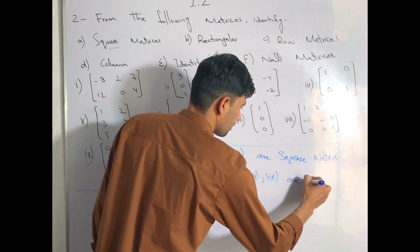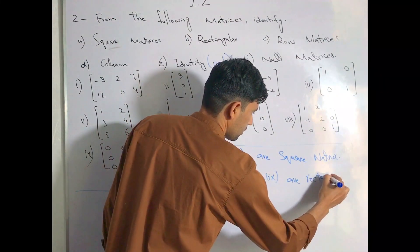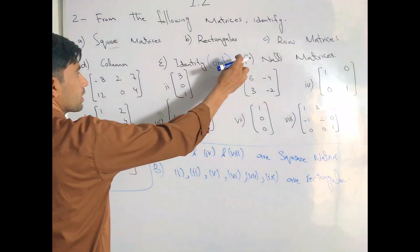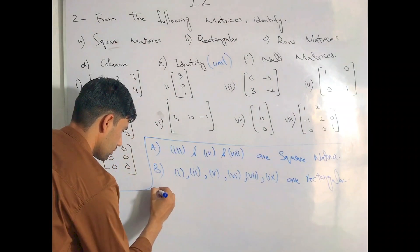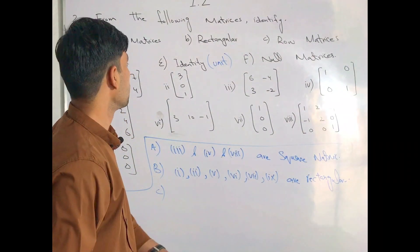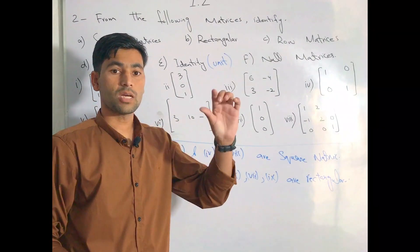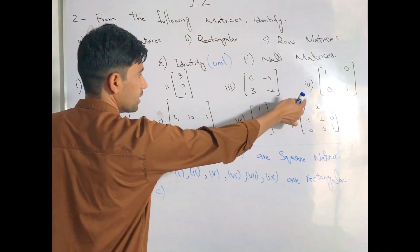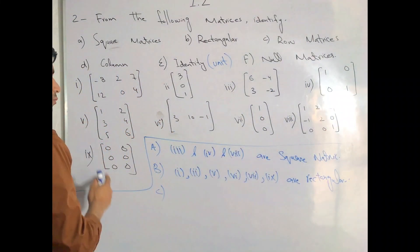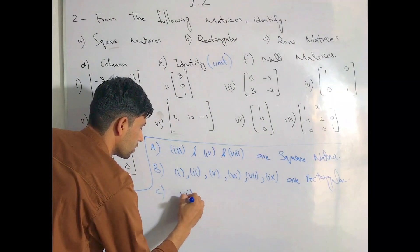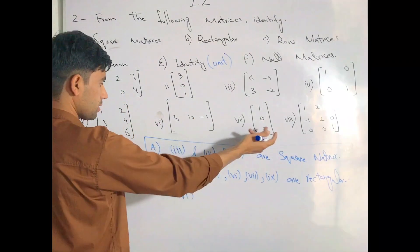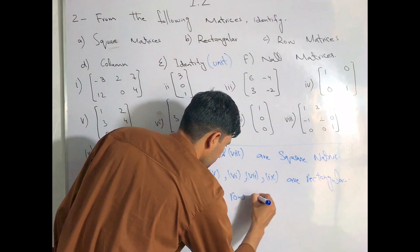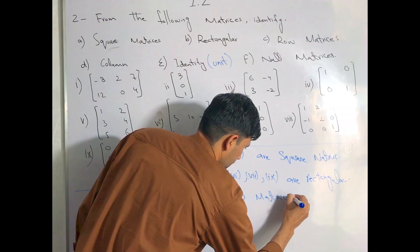Now look at part C: row matrices. How do row matrices work? They have just one row. Here we can see the row and the column. This is a row matrix.